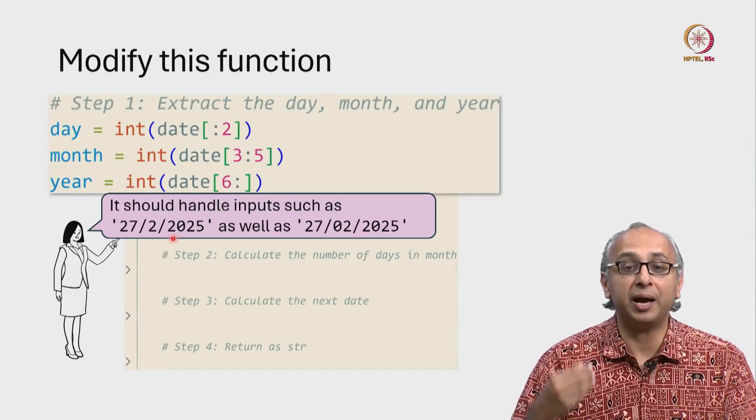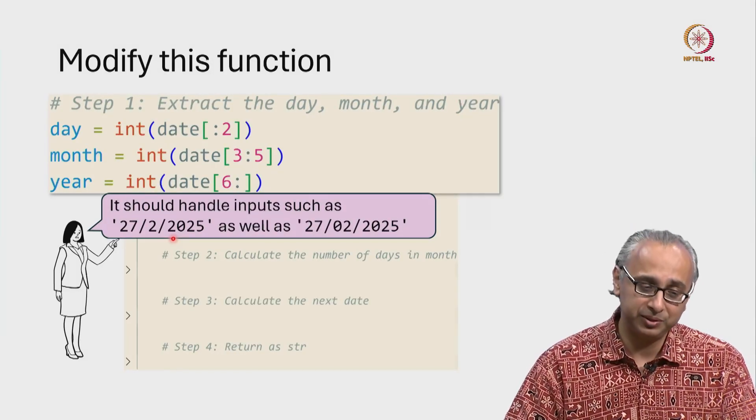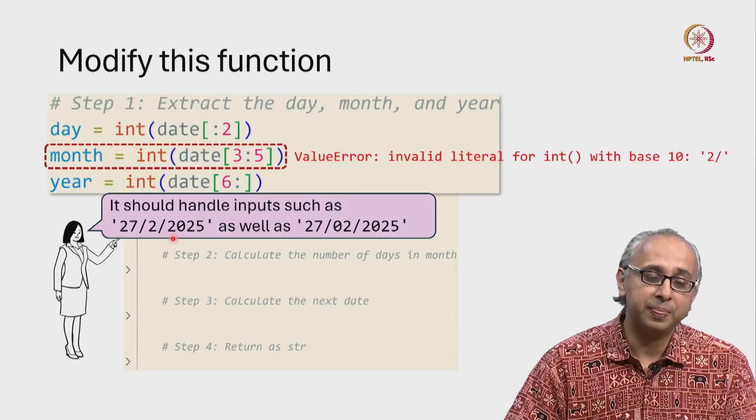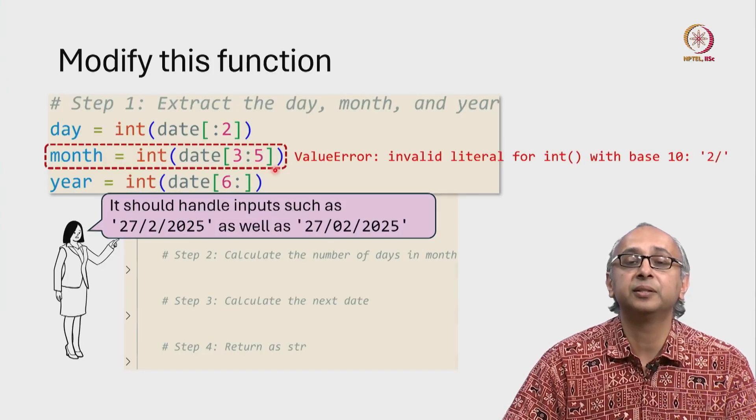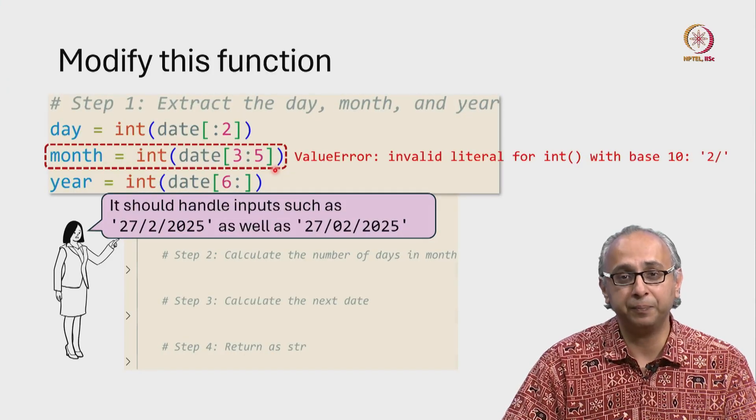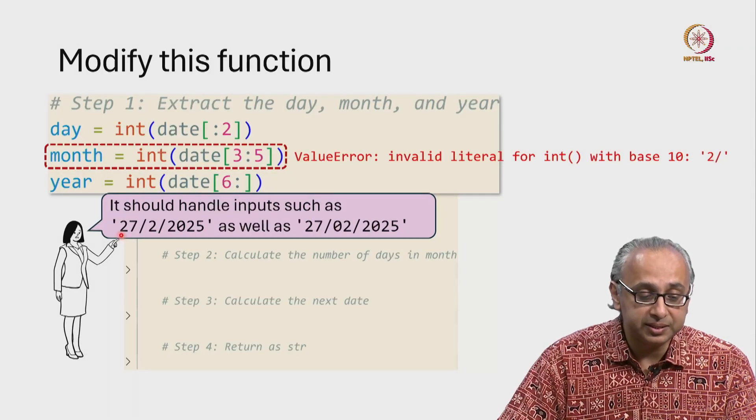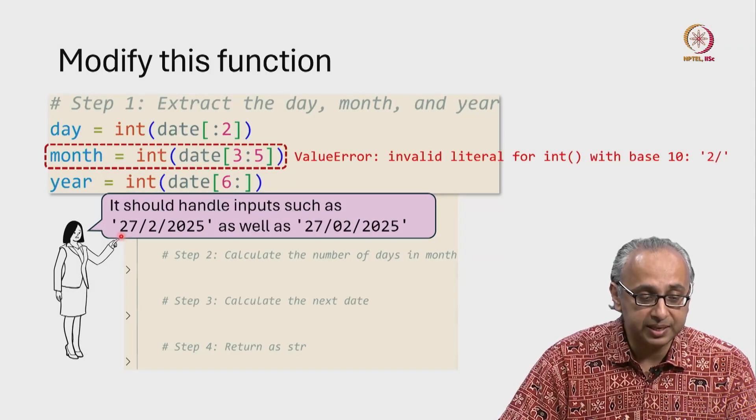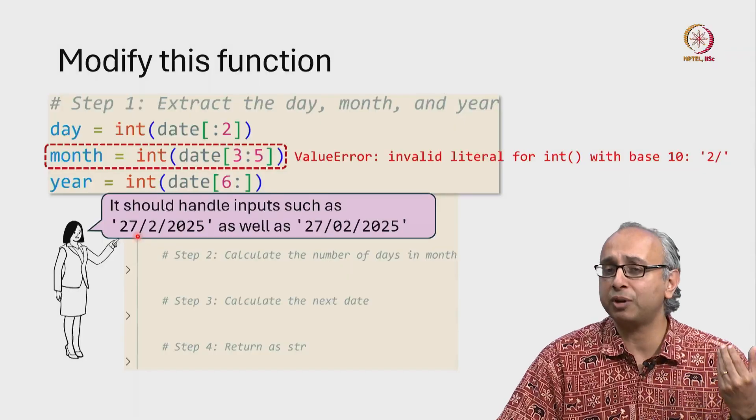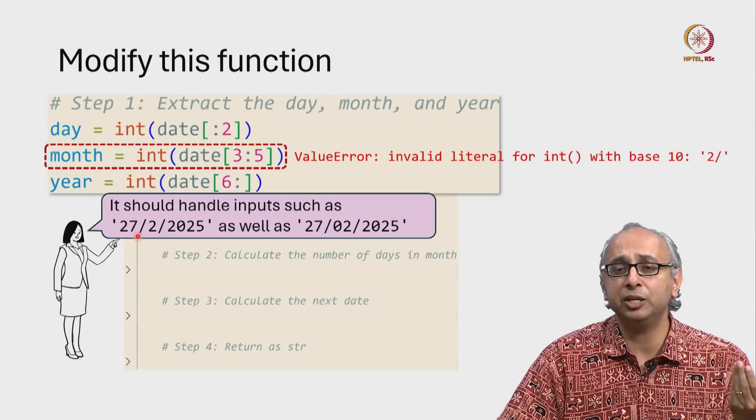If you were to trace this code either mentally or on Python Tutor, you would find that on this line the code will fail. Why? Because if the input is like this, the day field is at index 0 and index 1. That gets extracted perfectly fine and gets converted into an integer. So this portion works fine.